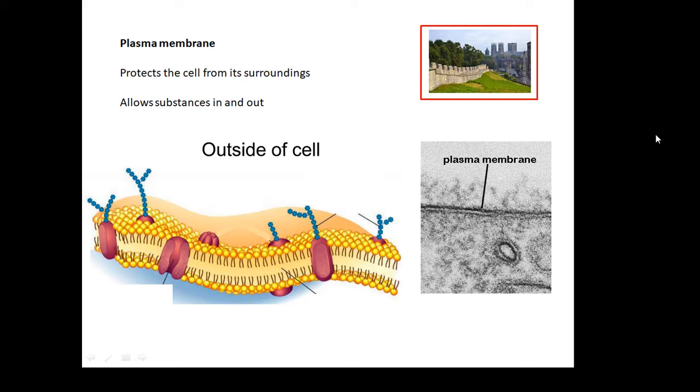The plasma membrane. If you imagine the cell as being like a city, this is the wall of the city, and there are gates, and things can get in and out. It protects the cell from its surroundings. It allows substances in and out, like carbon dioxide, oxygen, and food. The plasma membrane, like the city walls.